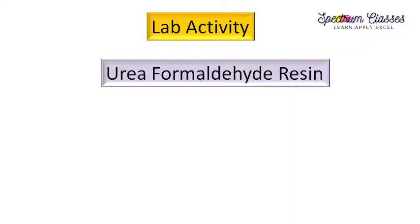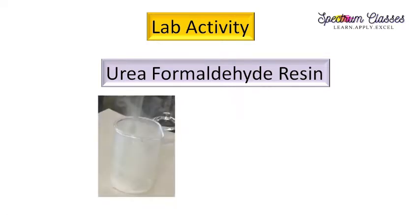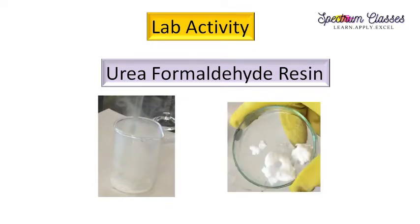Hello everyone, welcome back to Spectrum Glasses. This is another lab activity video, and in this video we are going to prepare a polymer. The name of the polymer is urea formaldehyde resin. When urea reacts with formaldehyde, the reaction looks like this, and the product obtained from this experiment looks like this at the end of the reaction. First we will discuss the reactions involved in this experiment, then I will show you the experiment.